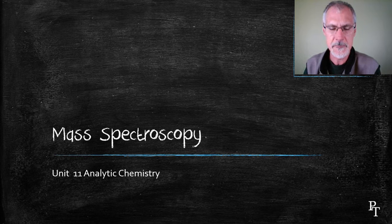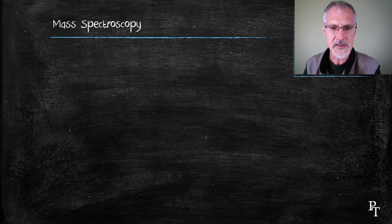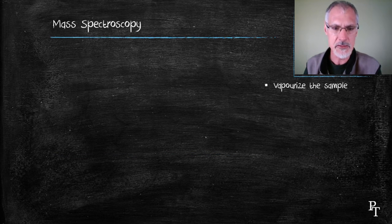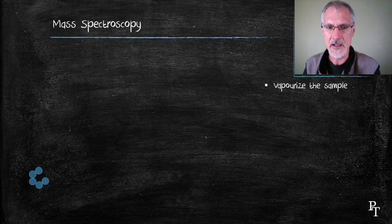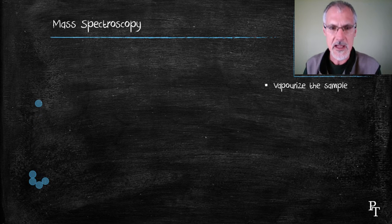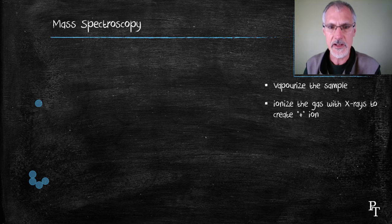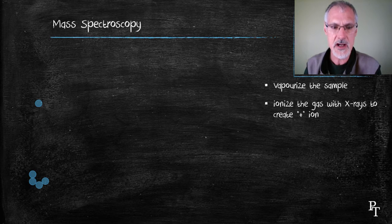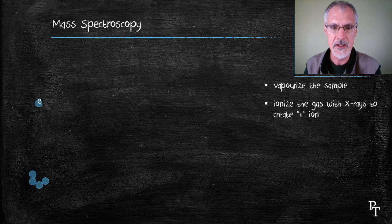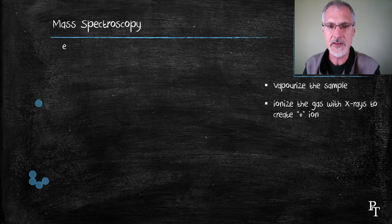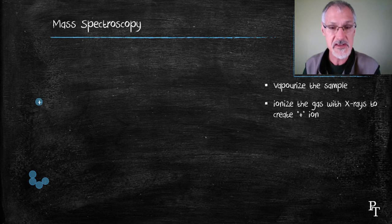So let's review the operation. We begin by vaporizing our sample. Here I'll show in the animation an individual atom being vaporized. That atom is then subject to x-rays in the hopes that those x-rays might knock off an electron from the atom and thereby turn it into a positively charged ion. It's essential that the particle develop a charge.